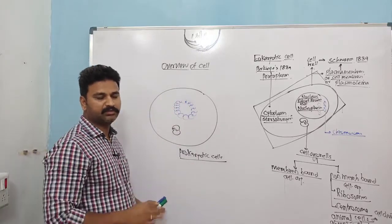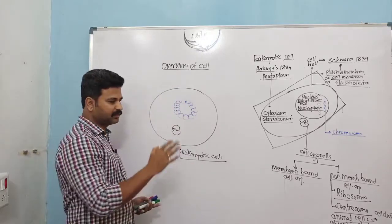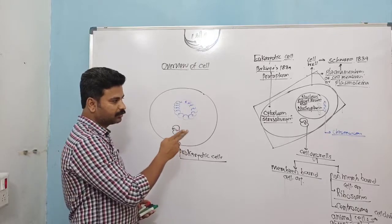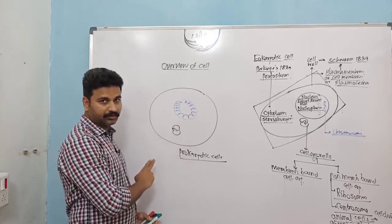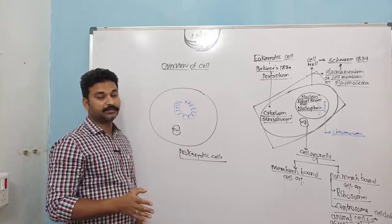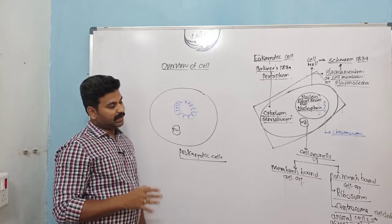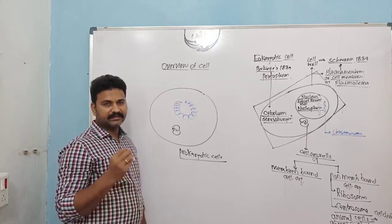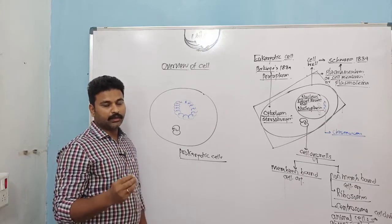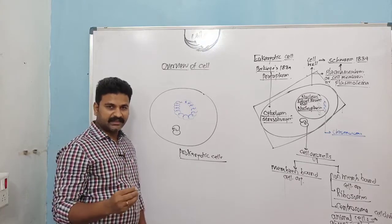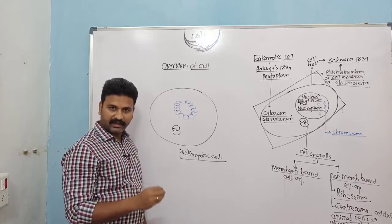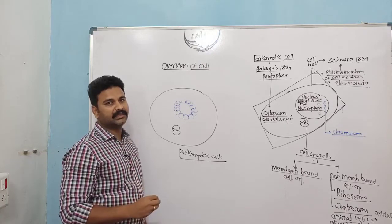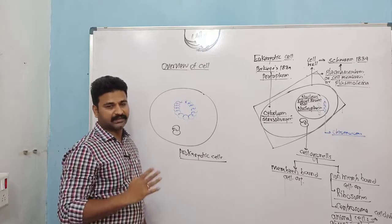So we have two non-membrane-bound cell organelles: ribosome, which is present in both eukaryotic and prokaryotic cells but differs in structure; and centrosome, which is present in animal cells and helps in cell division, but is absent in plant cells.